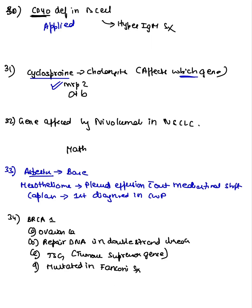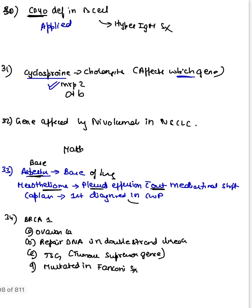A match-the-following type question: Asbestosis affects the base of the lung. Mesothelioma presents with pleural effusion without mediastinal shift. Caplan syndrome is coal worker's pneumoconiosis plus rheumatoid arthritis.